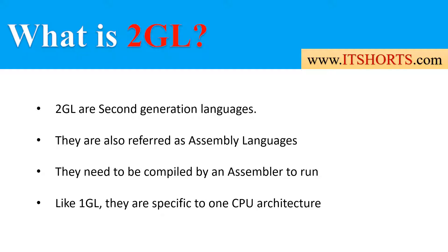The languages in 2GL are also referred to as assembly languages and they need to be compiled by an assembler to run. An assembler converts the 2GL program codes into machine language so that the CPU can understand. Like 1GL, they are specific to one CPU architecture, meaning that if you wrote a program in assembly language for a particular CPU architecture, you may not be able to run it on a different CPU architecture. So like machine language, 2GL is also dependent on the CPU architecture.